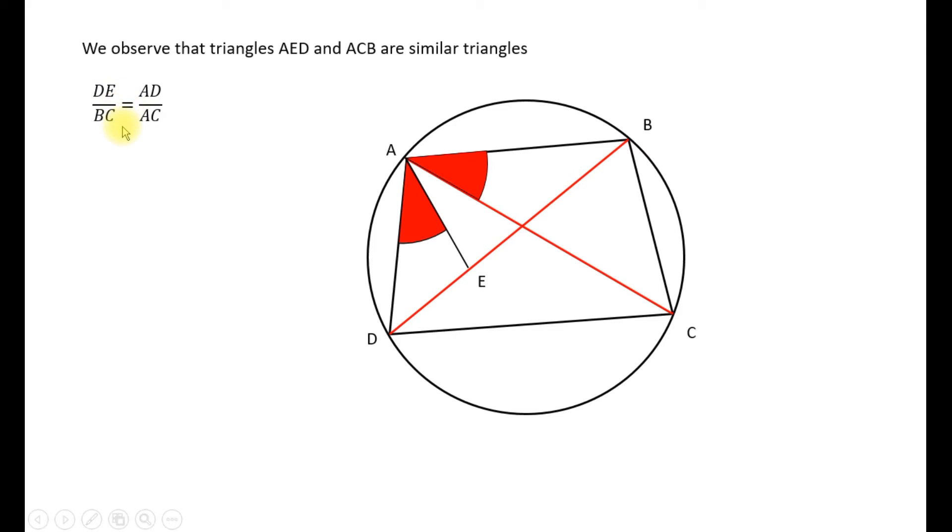So we can write the ratio of corresponding lengths as you see here. And notice corresponding lengths means the ratio of sides opposite equal angles are the same. So DE divided by BC is equal to AD over AC.